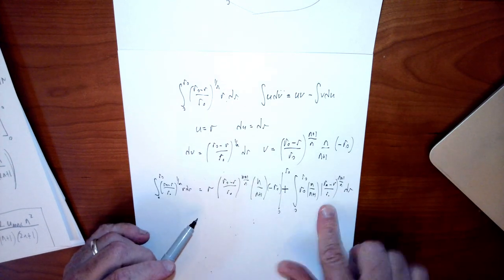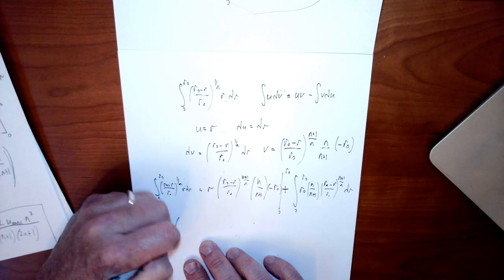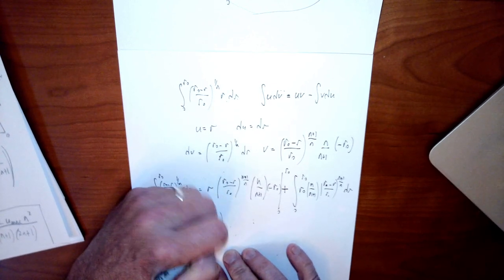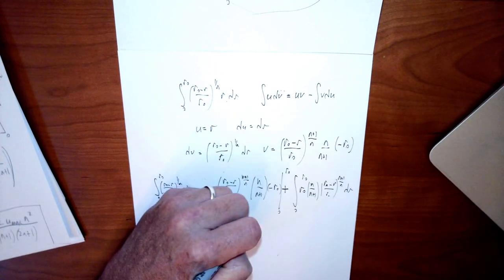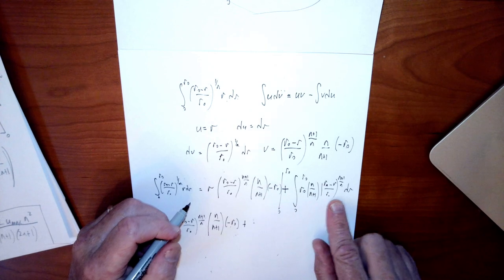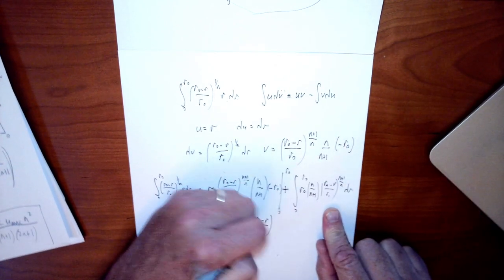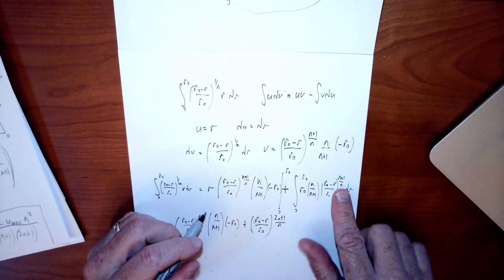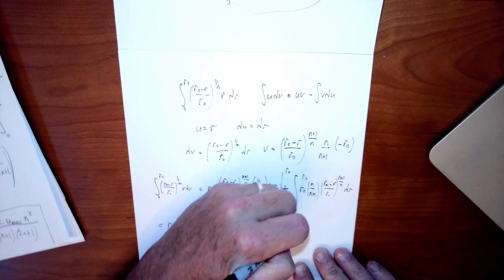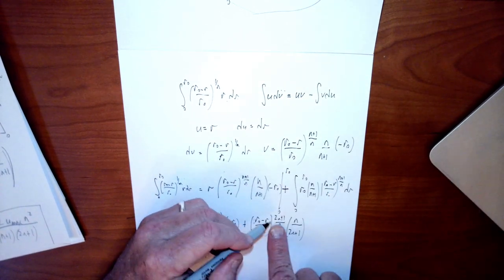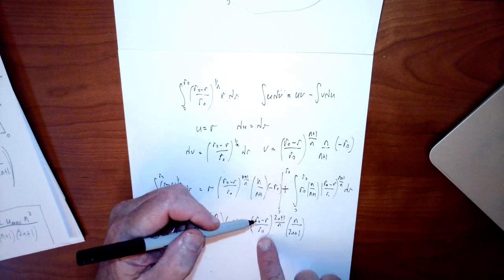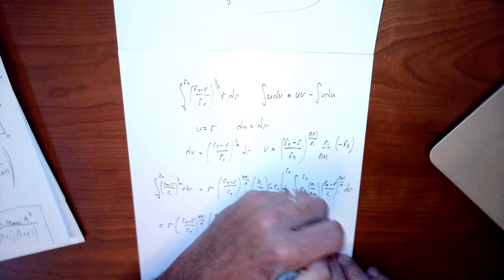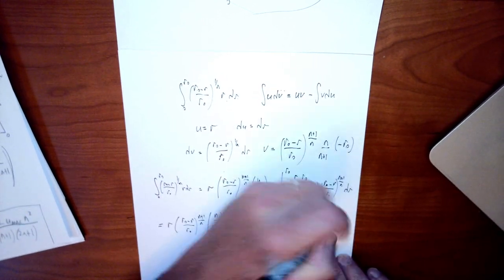Taking that remaining integral is similar to before: raise the exponent by 1, so it becomes (2n+1)/n, multiply by n/(2n+1), and pick up another factor of (−r₀). So the term becomes r · [(r₀ − r)/r₀]^((n+1)/n) · n/(n+1) · (−r₀), plus r₀ · n/(n+1) times {[(r₀ − r)/r₀]^((2n+1)/n) · n/(2n+1) · (−r₀)}, all evaluated from 0 to r₀.